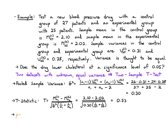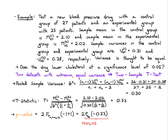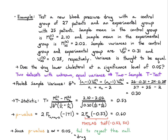To get the p-value, we use a t-distribution with n1 plus n2 minus 2 = 50 degrees of freedom, evaluating 2 times the CDF at minus 0.53: tcdf(−0.53, 50) in MATLAB gives approximately 0.6. Since this p-value is way above the significance level of 0.05, we fail to reject the null hypothesis. We say this is a plausible observation under the null, meaning the drug does not lower cholesterol at this significance level.